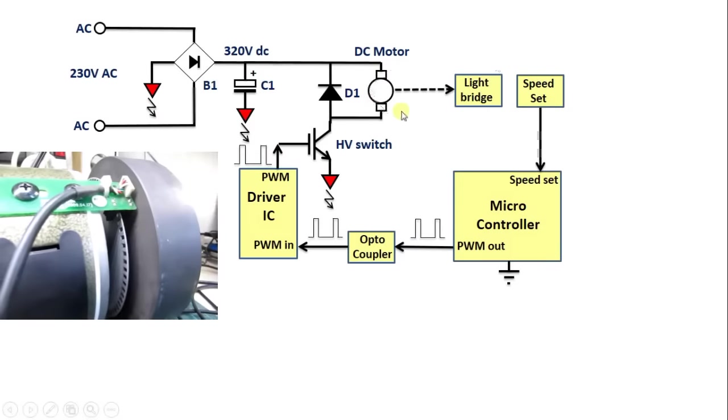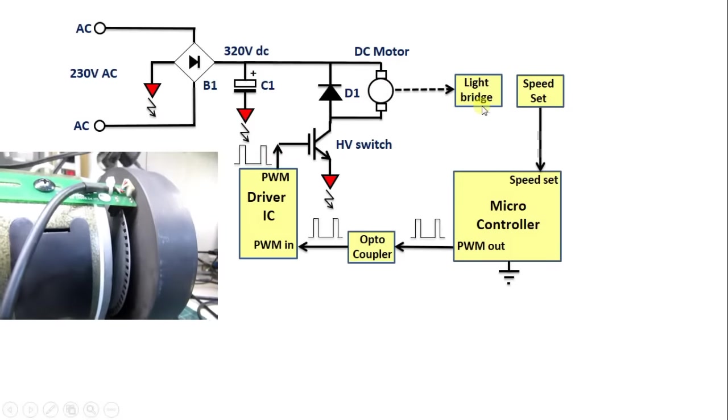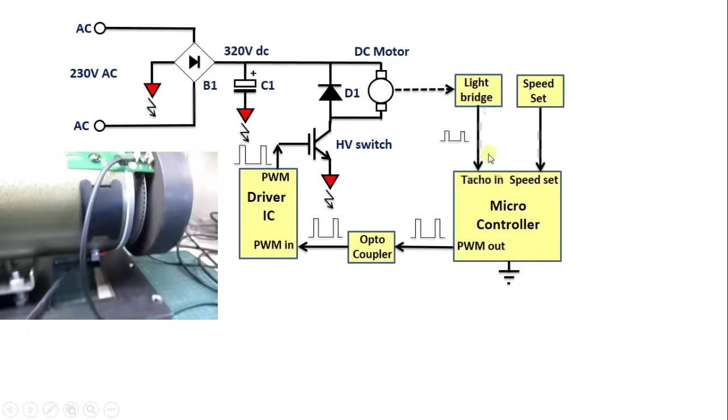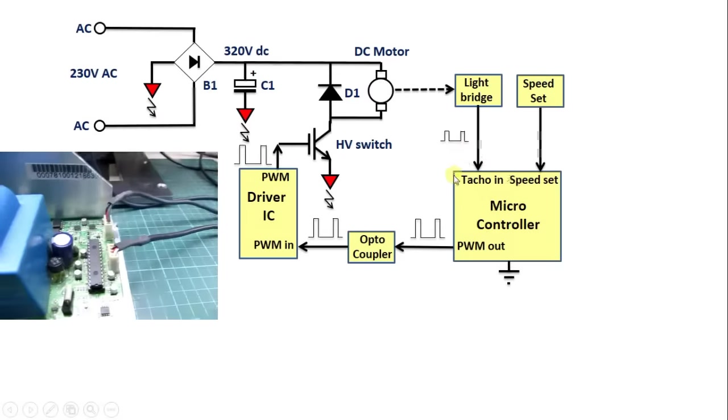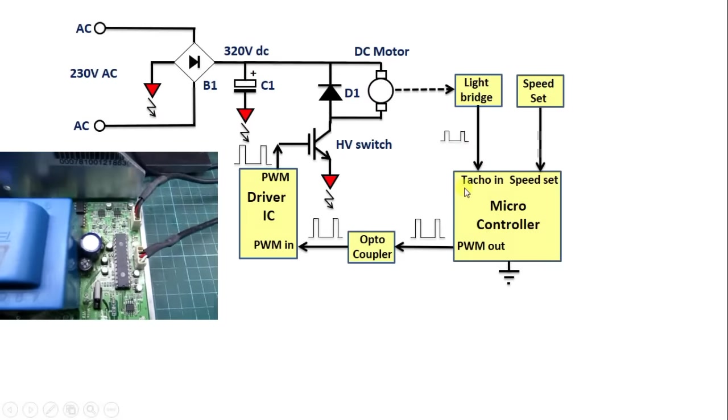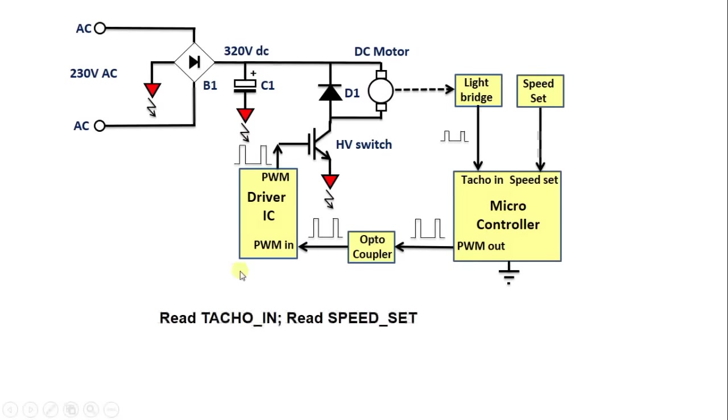A disk with holes is mounted on the motor shaft, and a light bridge measures the motor shaft speed. This signal is also fed to the microcontroller. The control loop is very simple.